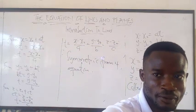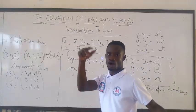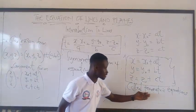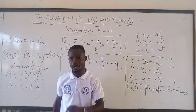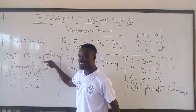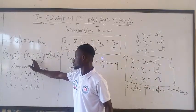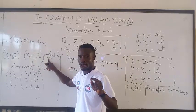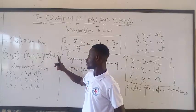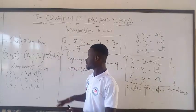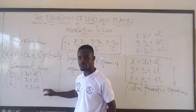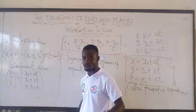That is the symmetric form, and that is the parametric form. You can also be asked to leave it in the Cartesian form — the point splits to one side and T is attached to the direction vector. That is the Cartesian form, also called the component form. See you for more examples. Bye-bye.